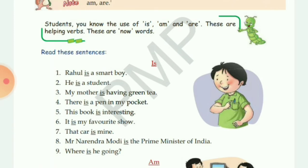When we frame a question, we use 'is' before the noun. But whenever it is a simple statement, we use 'is' after any singular noun or pronoun, and after the five friends — he, she, it, this, and that.